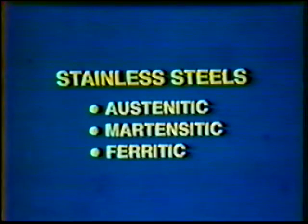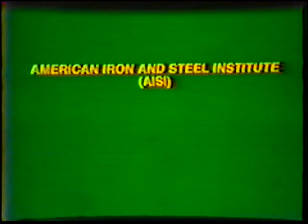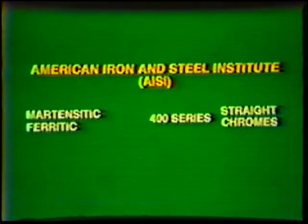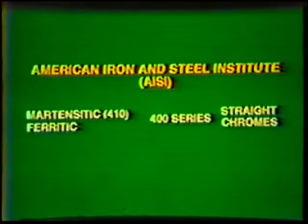Stainless steels are available in three major categories based on microstructure: austenitic, martensitic, and ferritic. The individual types within each group are classified by the American Iron and Steel Institute with a three-digit number. The martensitic and ferritic types are classified in the 400 series. These are called the straight chromes, since these steels contain only chromium, or chromium with small amounts of other alloys. For instance, a 410 stainless has a martensitic structure, while a 430 has a ferritic structure.